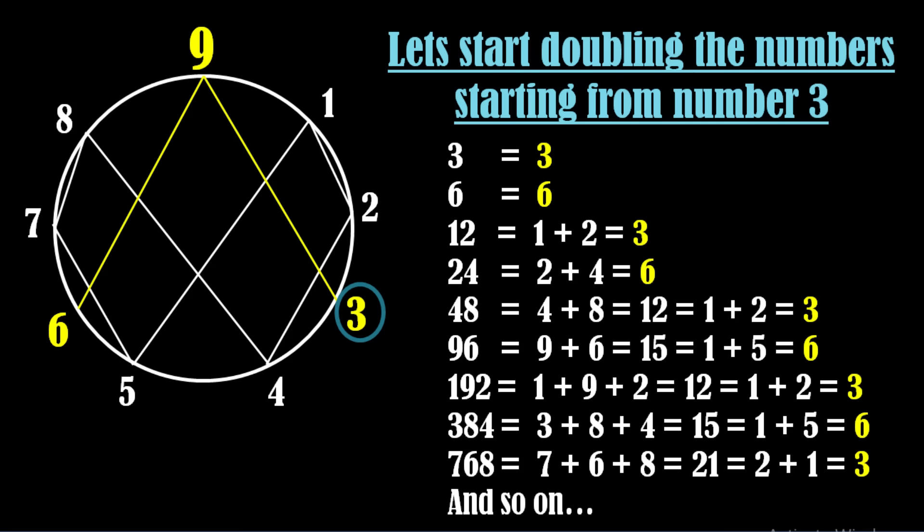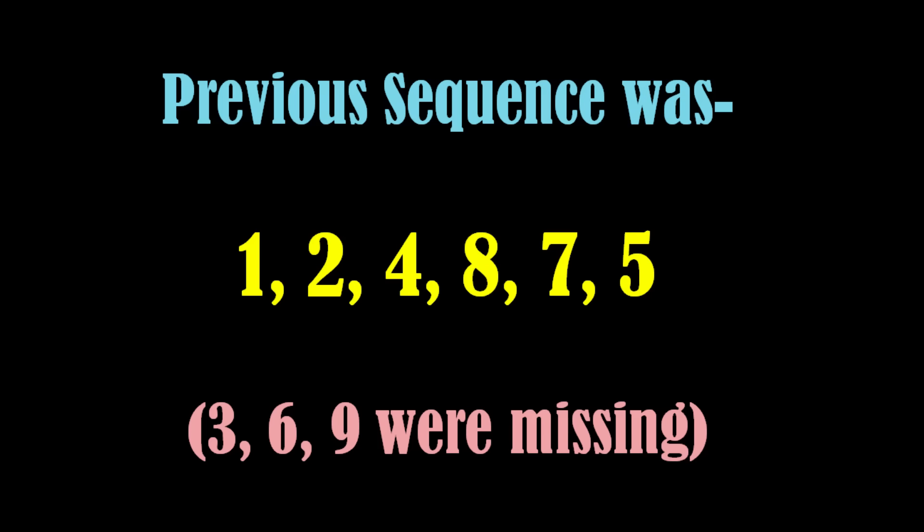You will be surprised after seeing the results. We will get only 2 numbers, 3 and 6 every time. Notice all the numbers that were present in the previous sequence are absent this time. And numbers 3 and 6 were completely absent in the previous sequences.